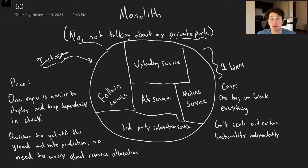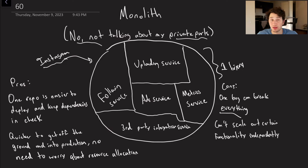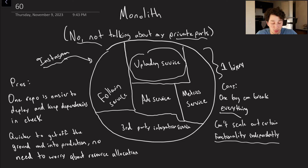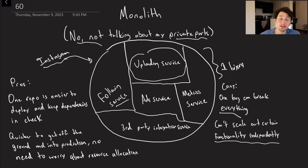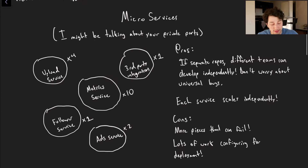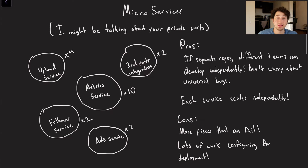Of course there are going to be cons with this approach as well, which is the reason that people have begun using microservices, at least in applications that require tons of scaling. One is that in the case that everything is in the same repository, one bug can really just take everything down — you screw up a dependency chain and all of a sudden you've got a sev two on your hands. The other is that you basically can't scale things out independently. What if people were uploading photos a million times more than they were following one another? You would probably want a lot more servers devoted to exclusively uploading things, but in the monolith state every single binary that you deploy has the ability to do both.